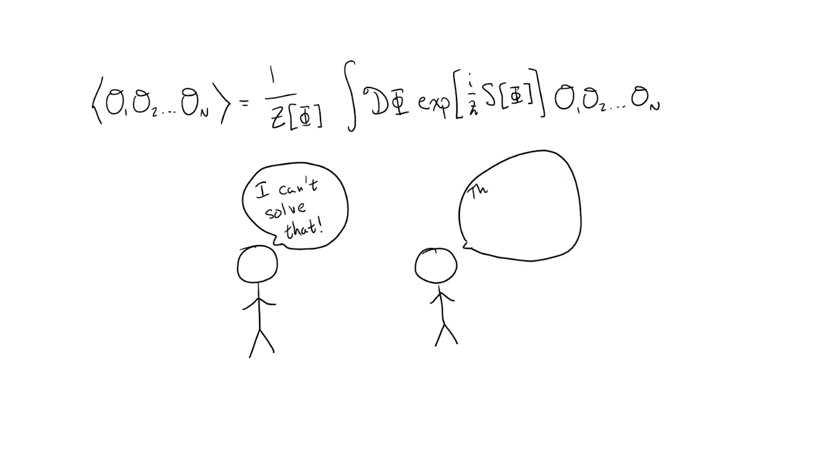So how do we get around this so that we can actually use the theory? Usually, the answer is that we have to make some sort of approximation in order to get a result which is close enough to the exact result, but allows us to actually do the calculations necessary to get a prediction.